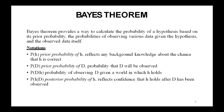To define the Bayes theorem precisely, let us first introduce some notation. The first notation is P(H), which denotes the initial probability that hypothesis H holds before we have observed the training data. This is called the prior probability of H. It may reflect any background knowledge we have about the chance that H is the correct hypothesis.